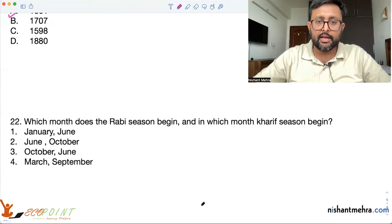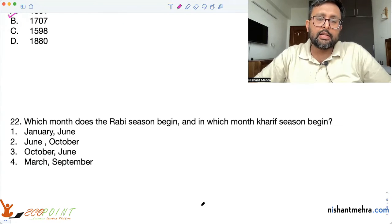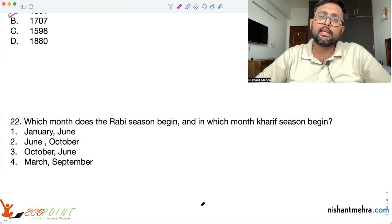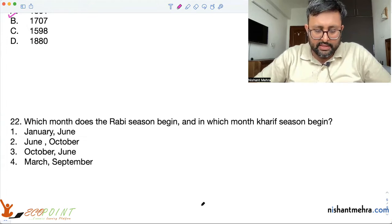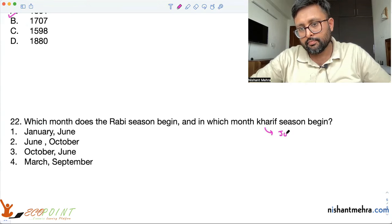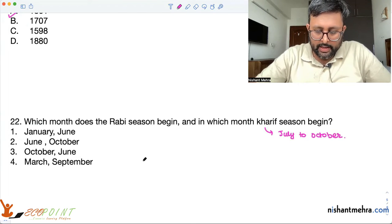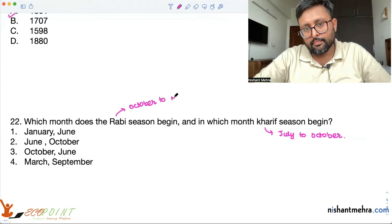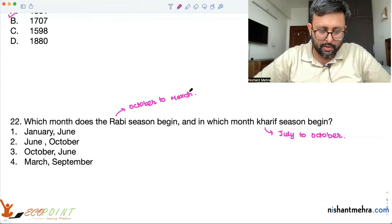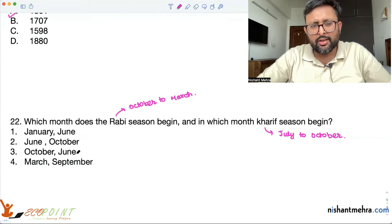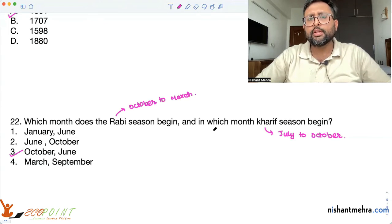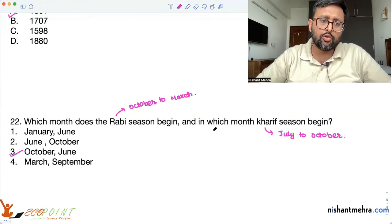In which month does the Rabi season begin and in which month does the Kharif season begin? The agricultural crop year in India starts from July to June. There are two main seasons: Kharif season runs from July to October, and Rabi season runs from October to March. So Rabi starts in October and Kharif starts in July — option 3 is the right answer. You should also know what crops are grown in each season.